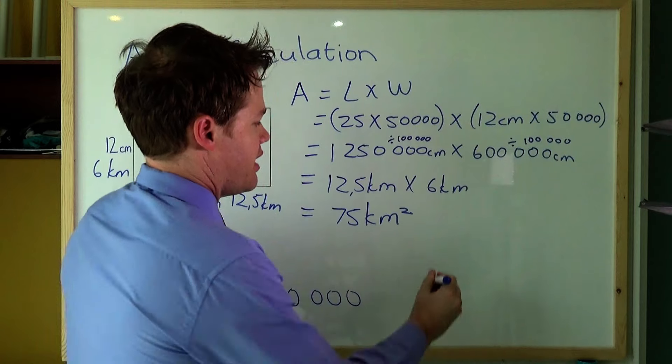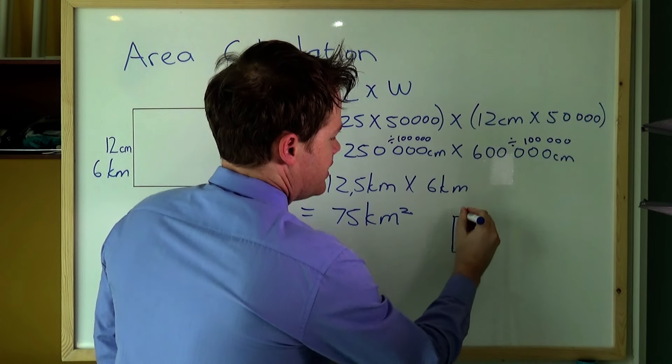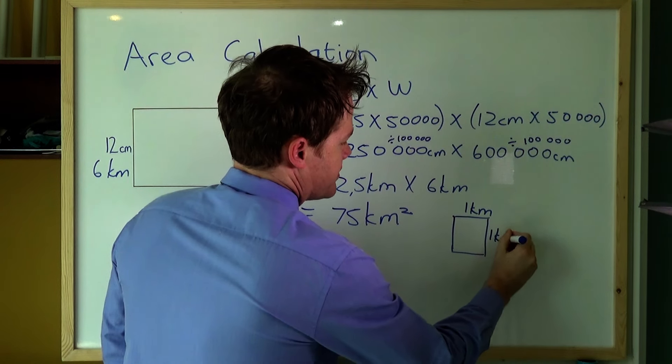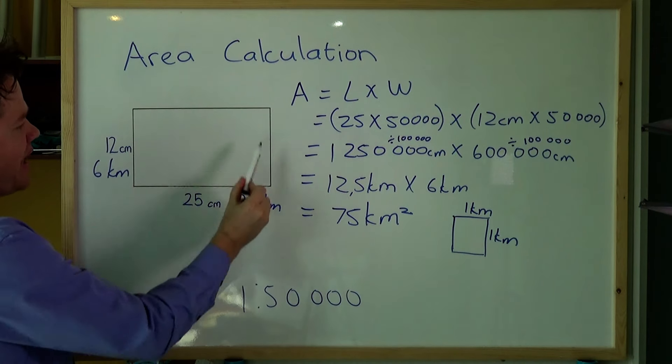One square kilometer is a square where each side is 1 kilometer long. So if this is a square kilometer right here, then each side of the square is 1 kilometer.